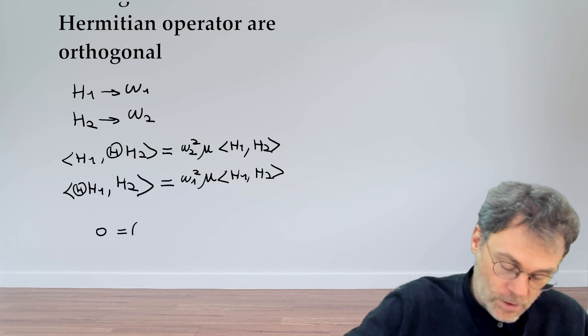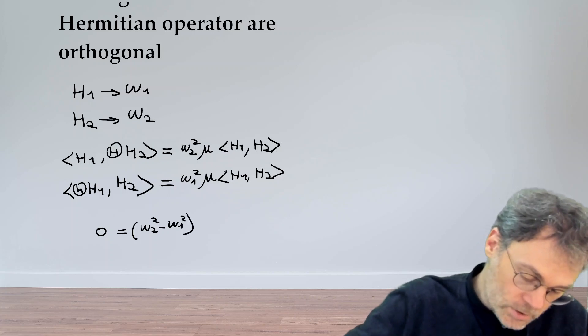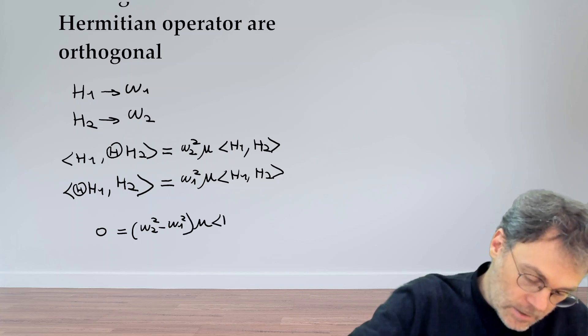And then here we have omega 2 squared, omega 1 squared, mu, and then the scalar product H1 H2.